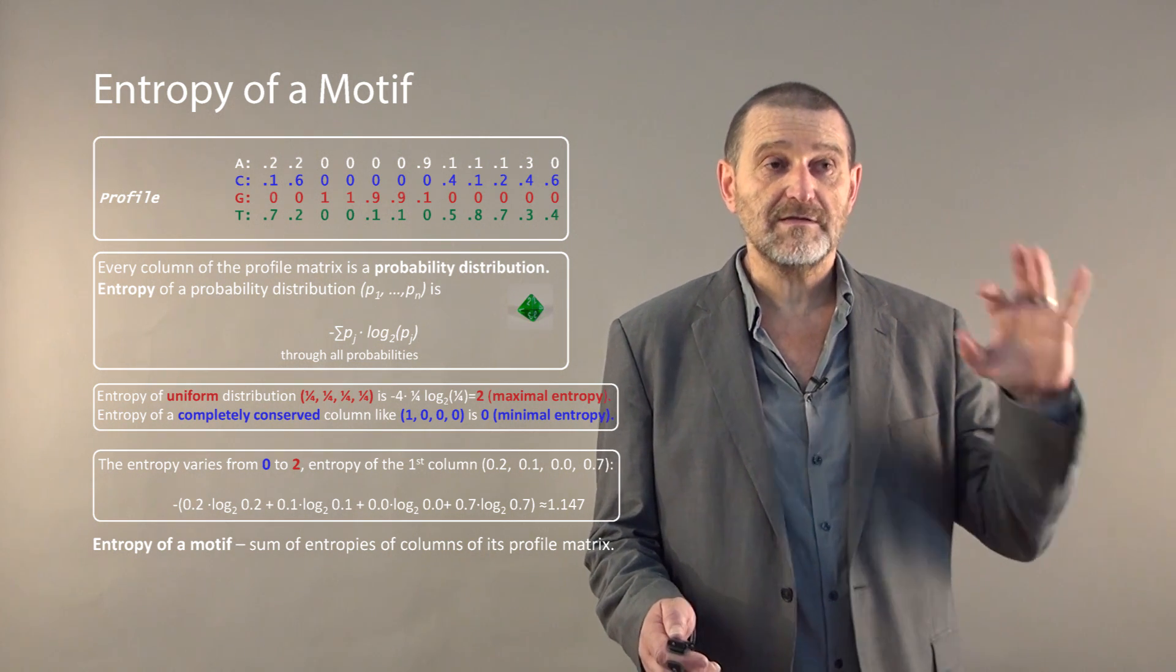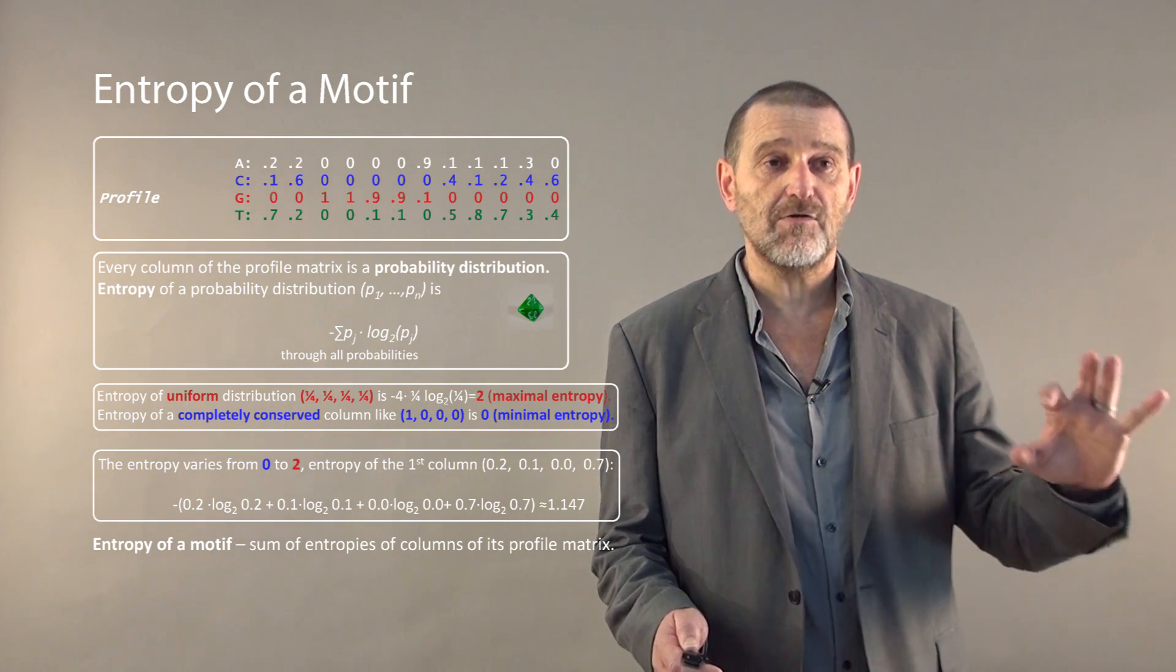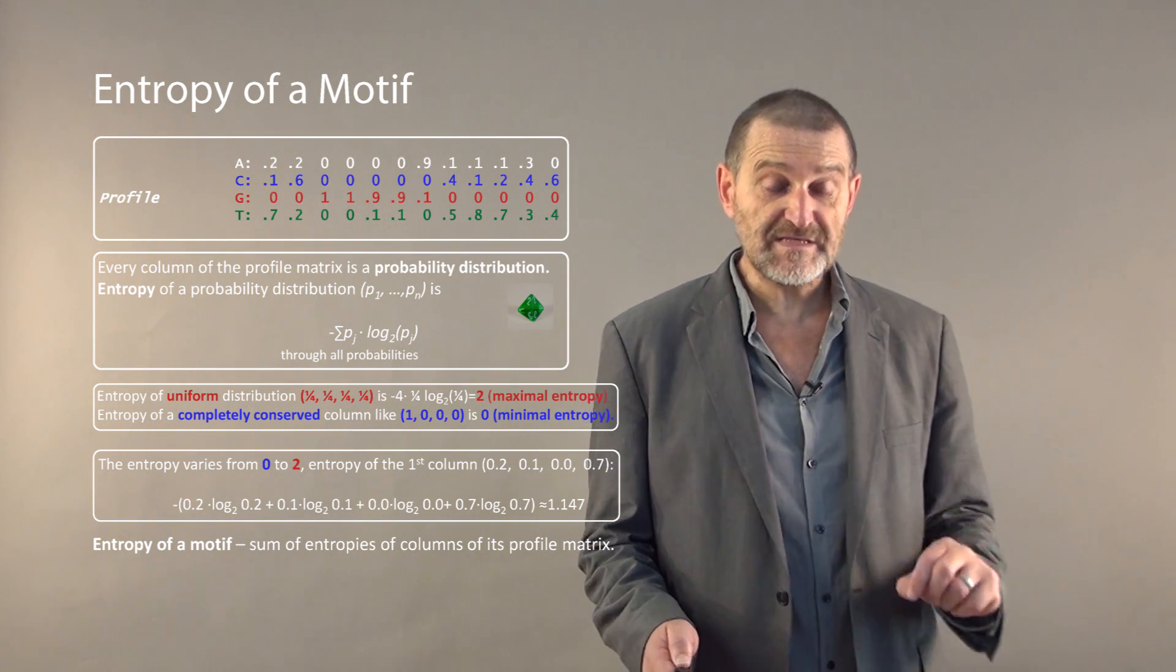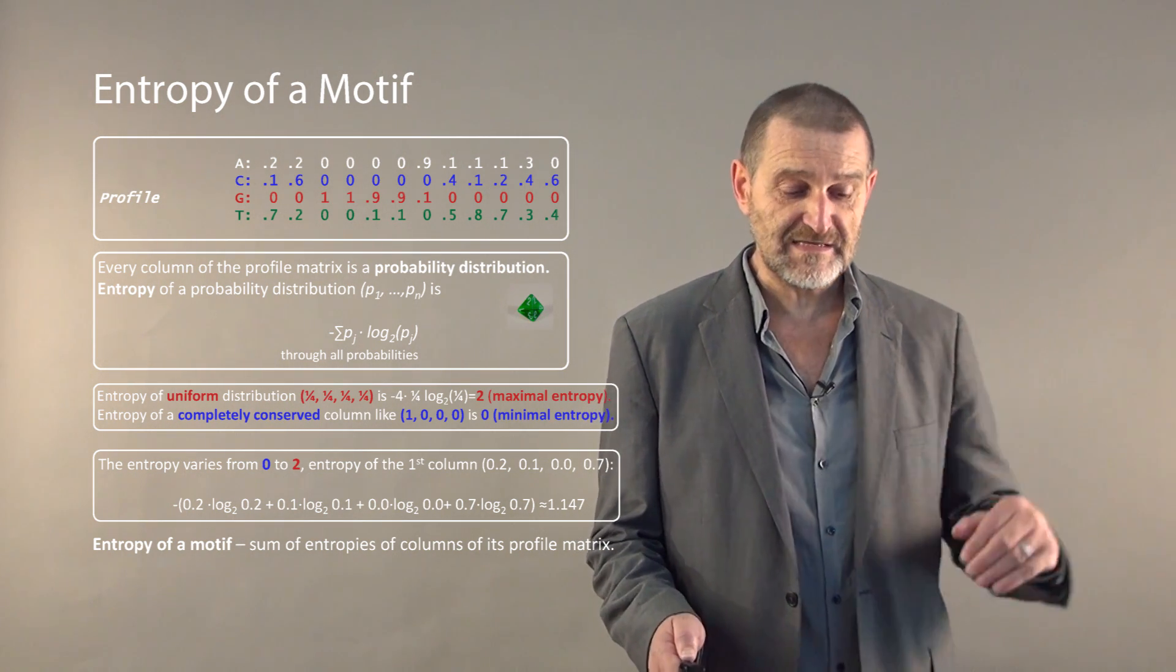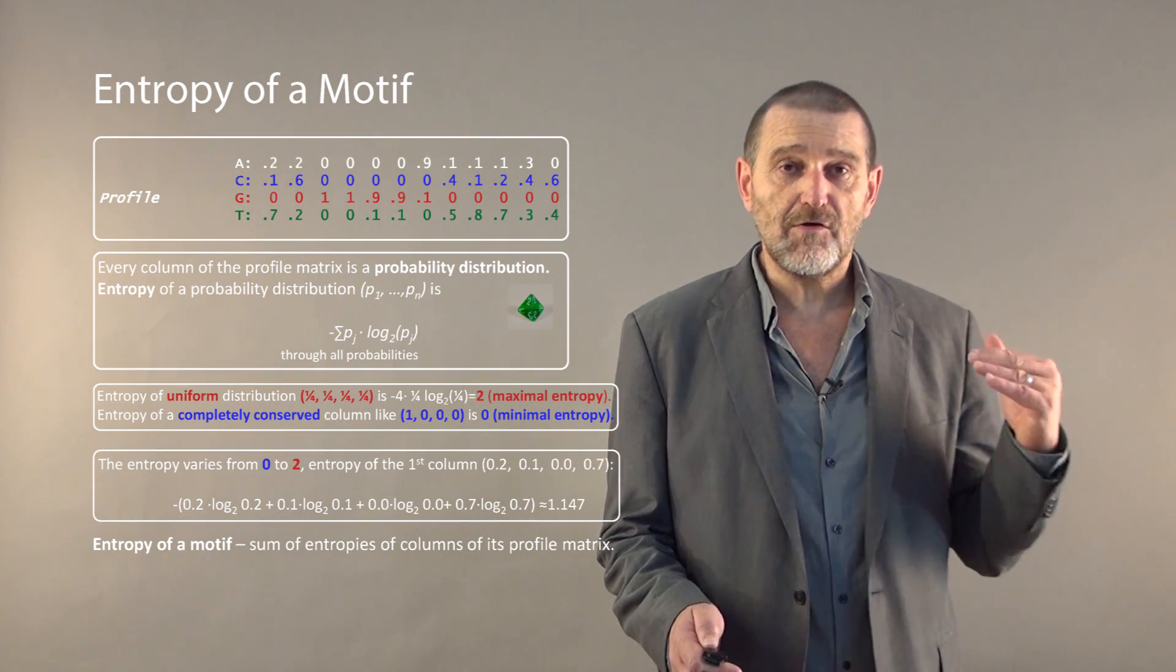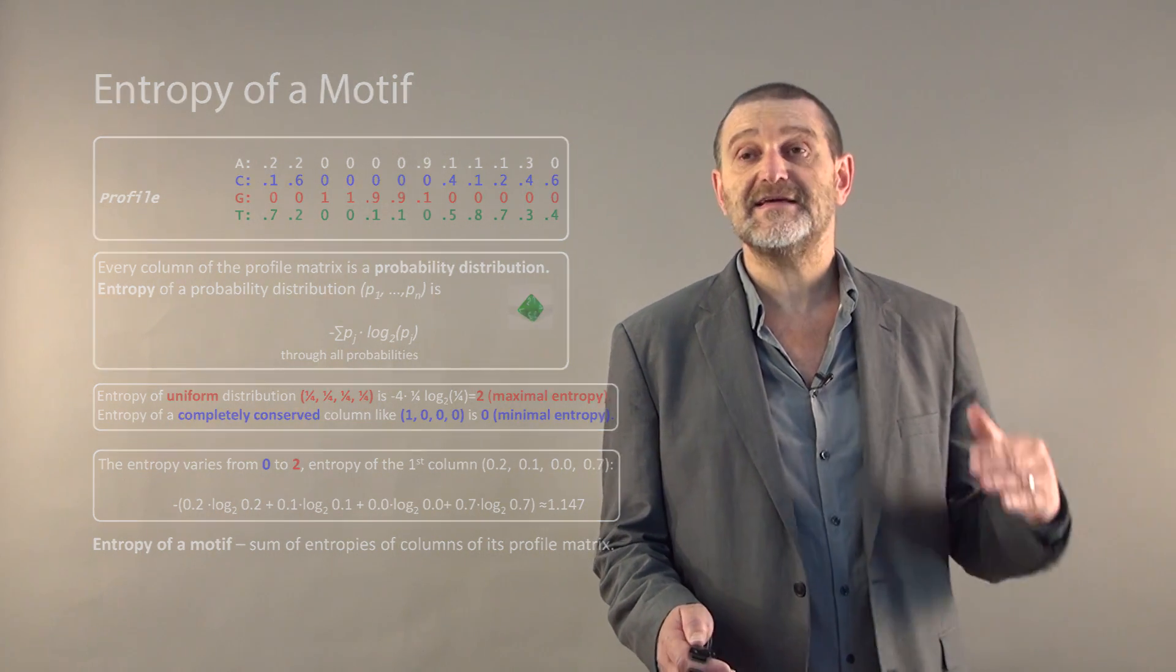And with maximal entropy where every symbol in the column is equally likely. So the entropy of a motif is defined as the sum of the entropies of its columns.